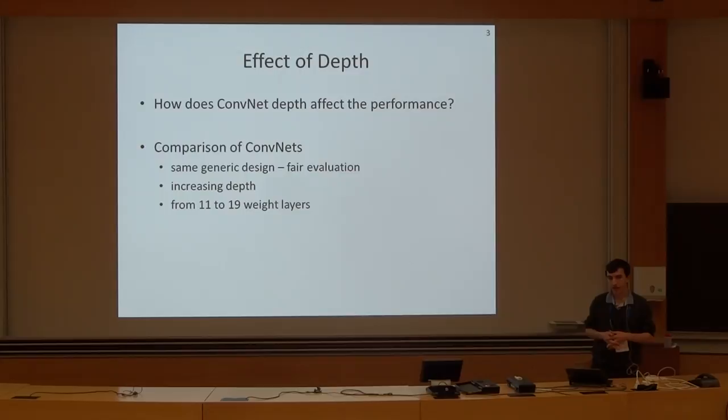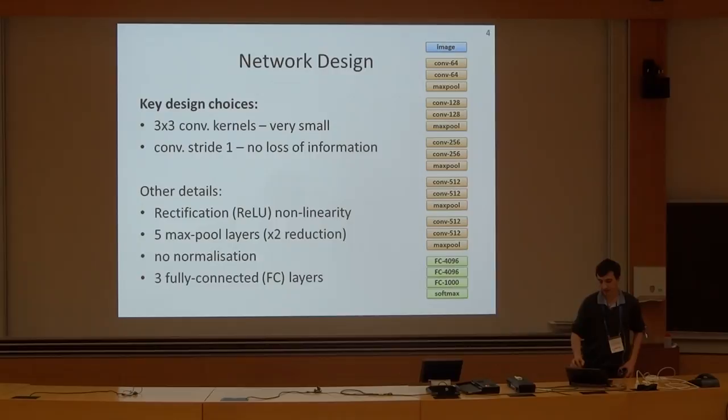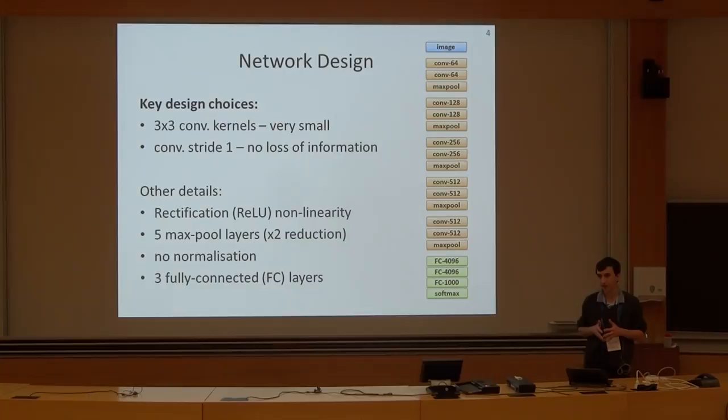When working on this submission, we wanted to figure out how the depth of a convolutional network affects its performance. To this end, we set up an evaluation of different network architectures which all follow the same generic layout but have different depth, so we can relate depth to performance. We increased the depth from 11 to 19 weight layers, and as far as the architecture is concerned, basically it looks like this.